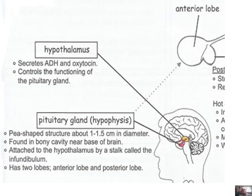This is on page 33 of the notes. You can see the pituitary gland in the top right-hand corner, also known as the hypophysis, and just above that is the hypothalamus — that yellow dot on your screen. The hypothalamus secretes ADH or antidiuretic hormone and oxytocin. It controls the functioning of the pituitary gland, so as much as the pituitary gland is the master gland, the hypothalamus controls how it functions.